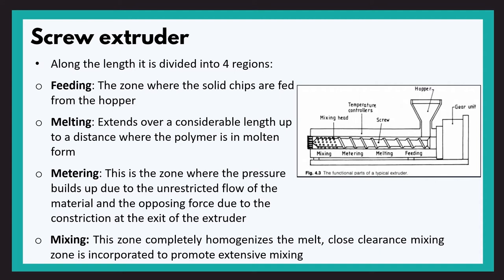The single screw extruder is divided into four zones. The first is the feeding zone, where solid polymer chips are fed from the hopper. The second is the melting zone, which extends over a considerable length up to the point where the last crystallite in the polymer has melted. In this zone, all solid polymer chips are converted into molten polymer and the required viscosity is achieved.